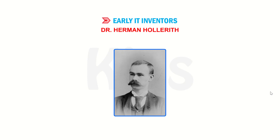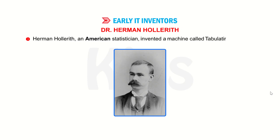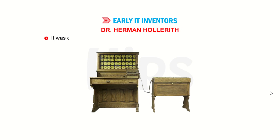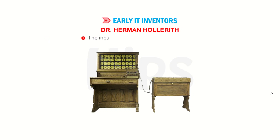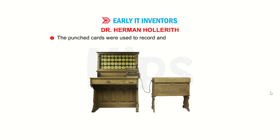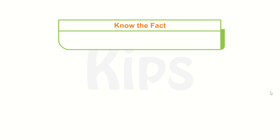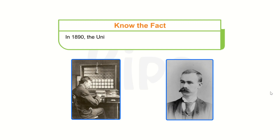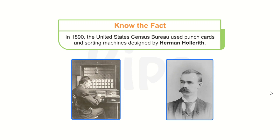Students, have you heard about Dr. Herman Hollerith? Herman Hollerith, an American statistician, invented a machine called the tabulating machine. It was capable of reading data, processing it, and giving the desired output. The input was given through punched cards. The punched cards were used to record and store data or information. In 1890, the United States Census Bureau used punch cards and sorting machines designed by Herman Hollerith.